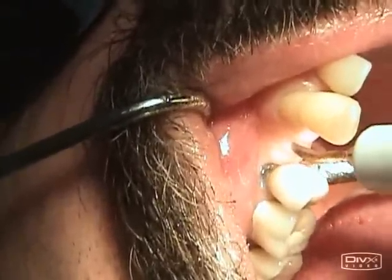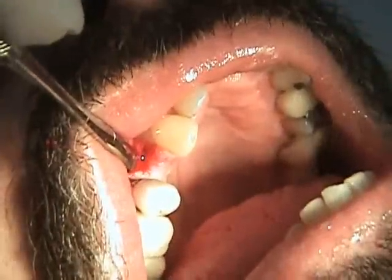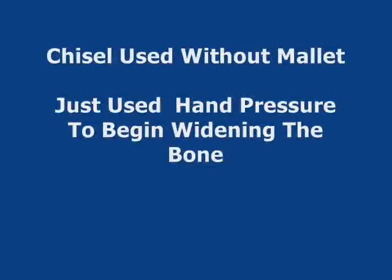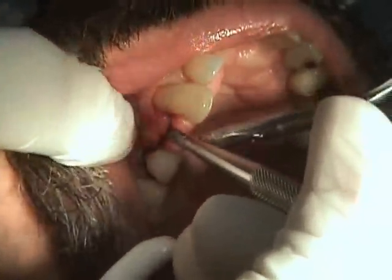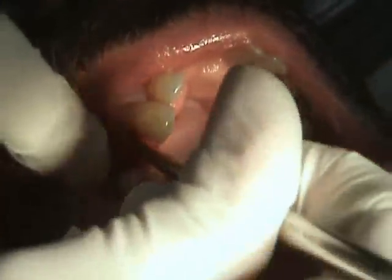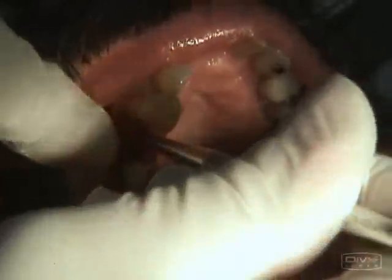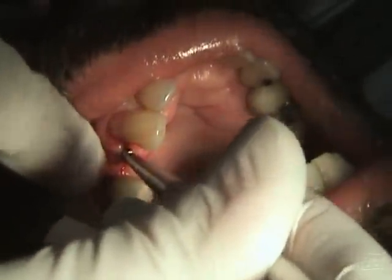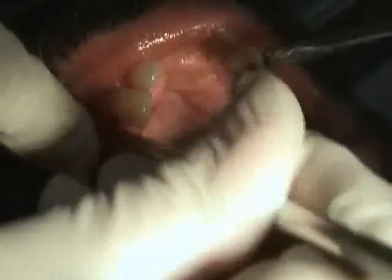The closed flap technique is used so that we can preserve the blood supply over the buccal plate. We have a little bit of a flap, and we're going to introduce a chisel — used without a mallet — into the bone flap, and begin pushing just by hand, pushing the buccal bone facially.